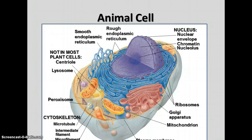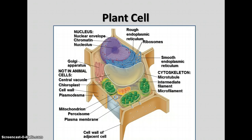An animal cell diagram from the book shows organelles present in most animal cells. Note that centrioles and lysosomes are present in animal cells but not in plant cells. A plant cell diagram shows organelles typically found in plant cells. Several structures are found only in plants: the central vacuole, a large storage area; chloroplasts, where photosynthesis occurs; the cell wall, not present in animal cells; and plasmodesmata, which are connections between plant cells. That concludes the notes on the introduction to cells.